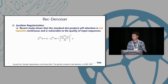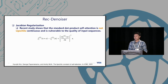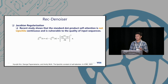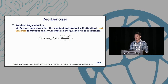We also found a recent ICML study showing that the standard dot-product self-attention is non-Lipschitz continuous. This means that adding a simple perturbation to the input sequence might cause a drastically different output. To solve this, we add a Jacobian regularization to our self-attention block. By this Jacobian regularization, we can achieve local Lipschitz continuity, as shown in the paper.